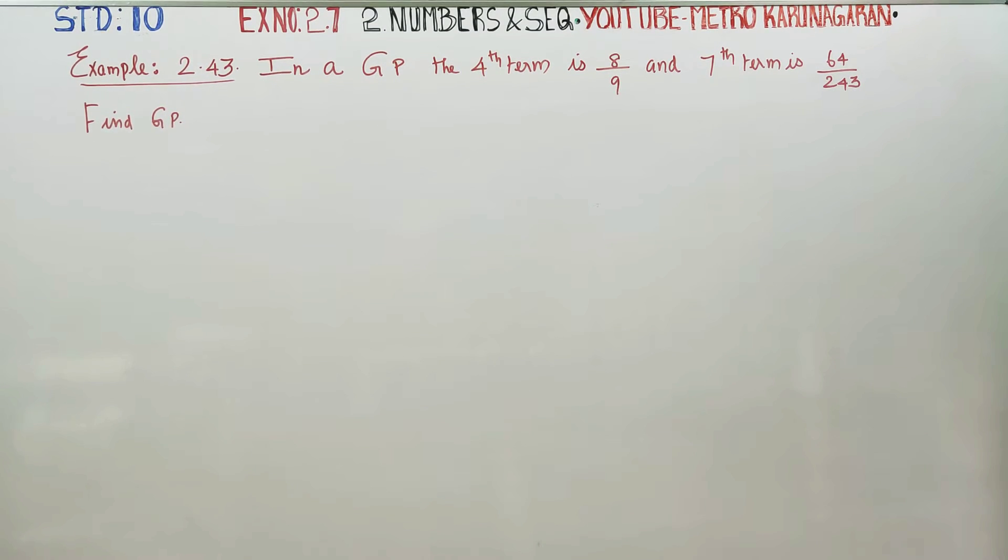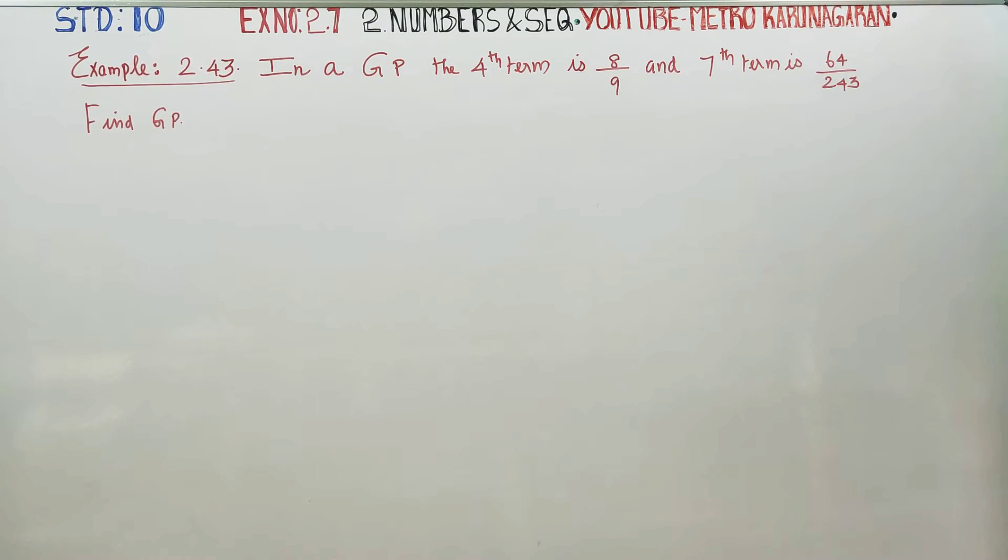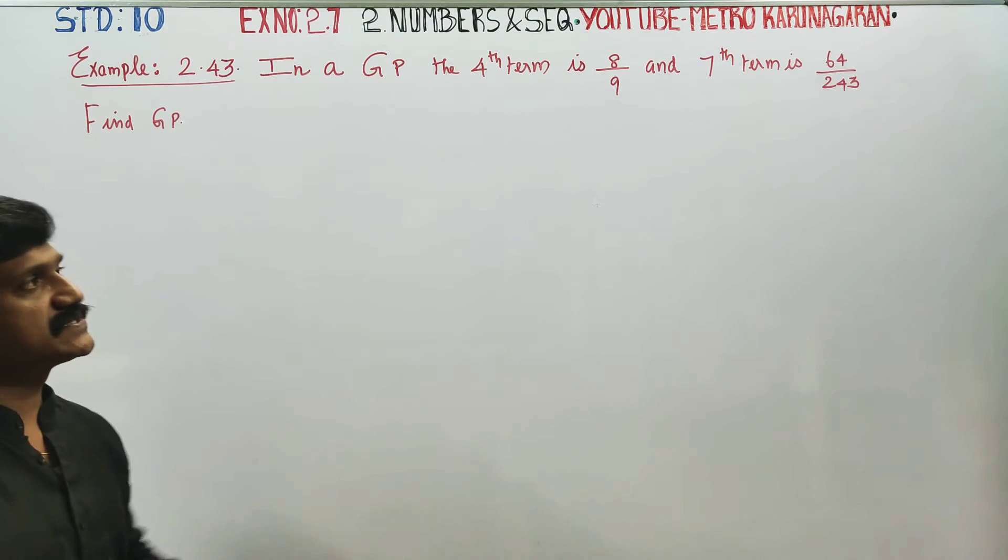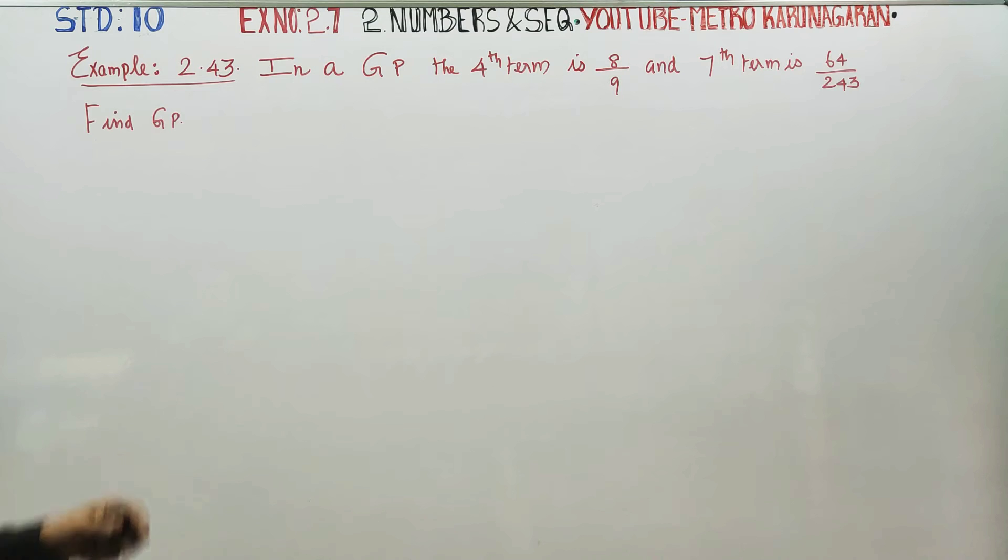Dear 10 standard students, in exercise number 2.7, example 2.43, in GP the 4th term is 8 by 9 and the 7th term is 64 by 243. Find the GP.